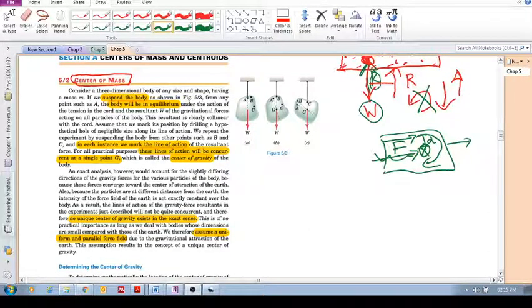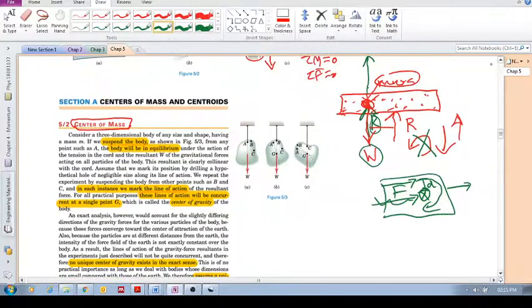You make a point, point A, attach a string, and hang this object from that point. You'll see that it's not rotating and it's not accelerating. As I explained in the previous video, if you want an object to not rotate—to be in rotational equilibrium...